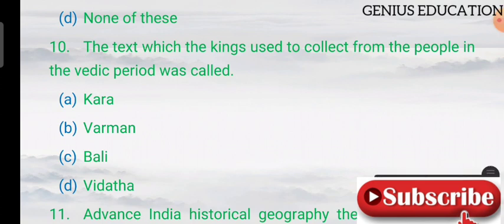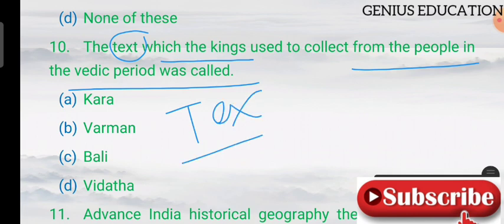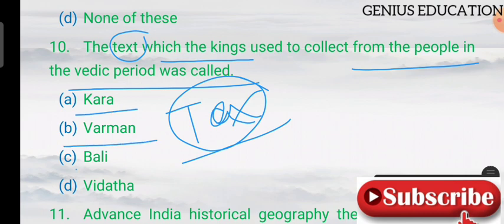Question 10: what is the term for the tax which the king used to collect from the people in the Vedic period? Note: this refers to tax, not text. The tax collected by the king from the people in the Vedic period was known as Bali.